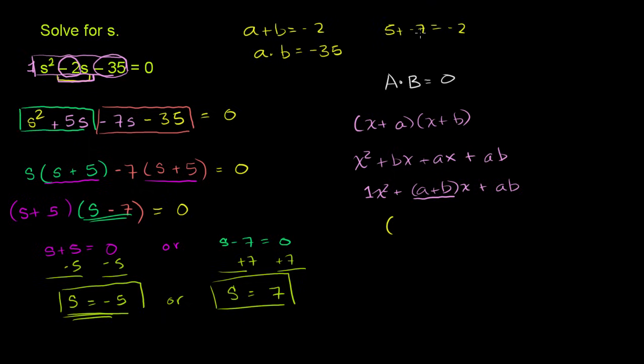So it'll be, or the product of the binomials where those will be the a's and the b's. So we figured out, it's 5 and negative 7. 5 plus negative 7 is negative 2. 5 times negative 7 is negative 35.